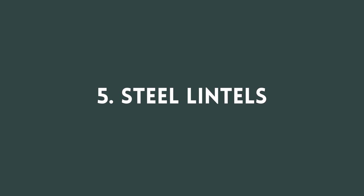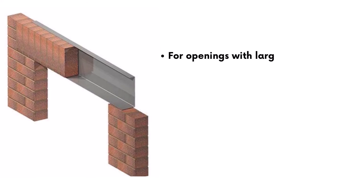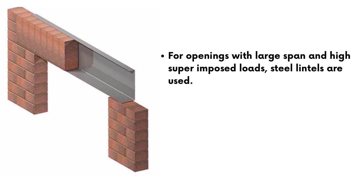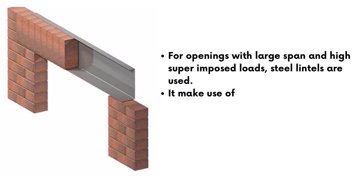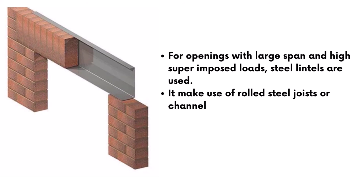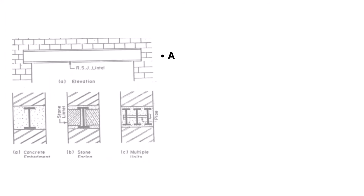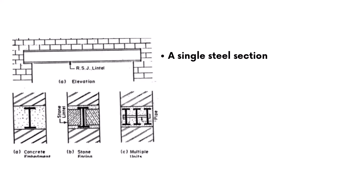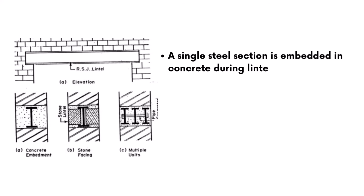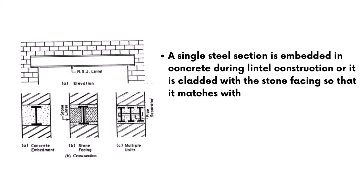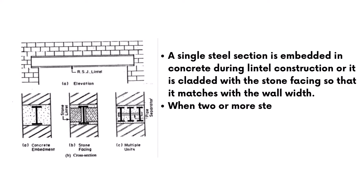Steel lintels are used for openings with large span and high superimposed loads. They make use of raw steel joists or channel sections, either in combination or as a single section for lintel construction. A single steel section is embedded in concrete during lintel construction, or it is cladded with a stone facing so that it matches the wall width. When two or more steel sections are used, they are kept in position using tube separators.